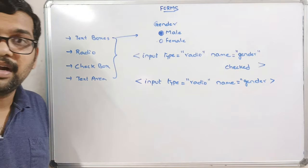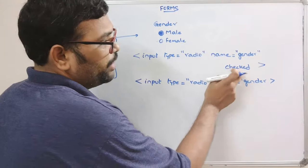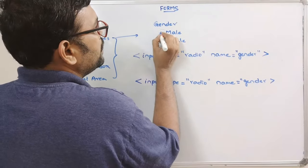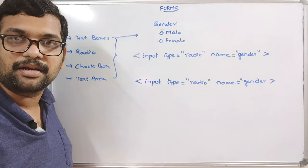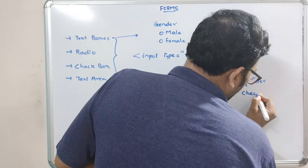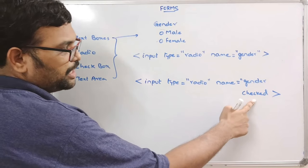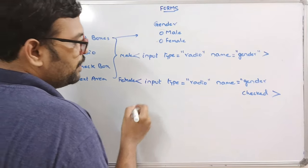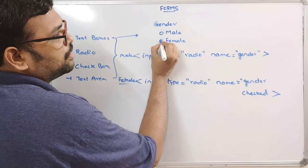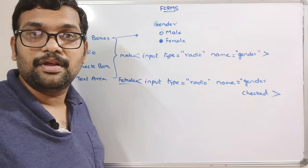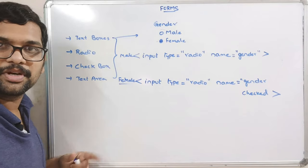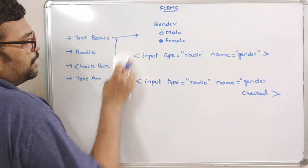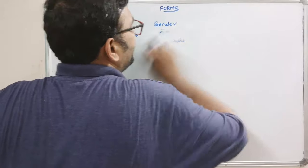If you use the checked property in a particular radio button, that button will be selected by default. For example, creating another radio button with input type equal to radio and the same name — if you write 'checked' in the male option, when you execute the page that radio button will be selected by default. Radio buttons mean selecting only one option — only one selection is accepted.